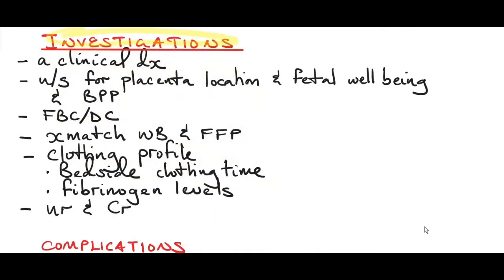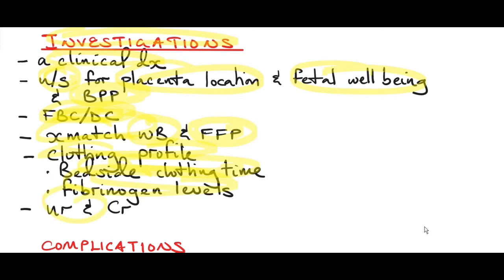Investigations in abrupta placenta: remember abrupta placenta is a clinical diagnosis — you can make the diagnosis based on clinical presentation alone. Ultrasound plays a minimal role and is done to locate the placenta, assess fetal well-being, and the biophysical profile. Do a full blood count and differential — checking hemoglobin for anemia due to bleeding and platelet count, as DIC can cause thrombocytopenia. Do a cross-match for whole blood and fresh frozen plasma and a clotting profile including bedside clotting time and fibrinogen levels, since DIC is a complication. Do urea and creatinine to check kidney function, as renal failure is another complication.